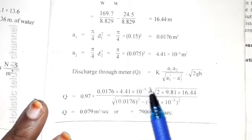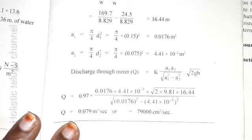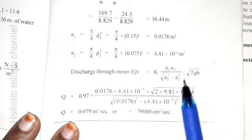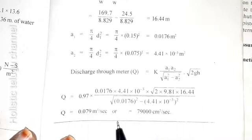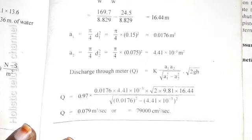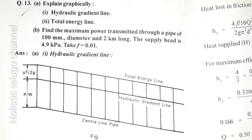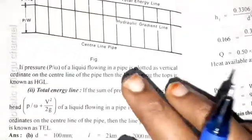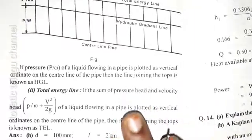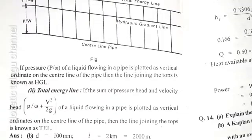Here Q is calculated. You can copy this material — it is very important. Hydraulic gradient line and total energy line — both are very important topics.